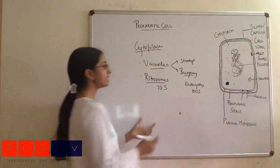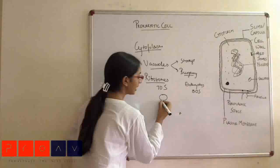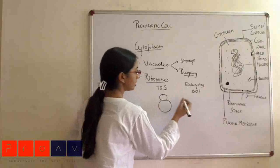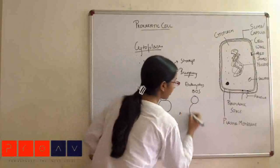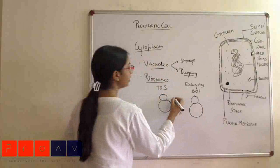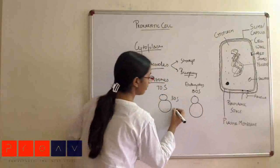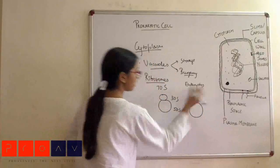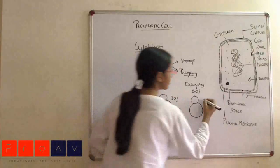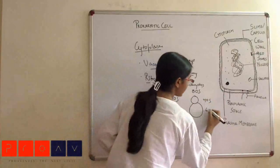So these 70S ribosomes would actually have two units, the smaller and the larger unit. The smaller unit here is of 30S and 50S, whereas in case of this, it would be 40S and 60S.